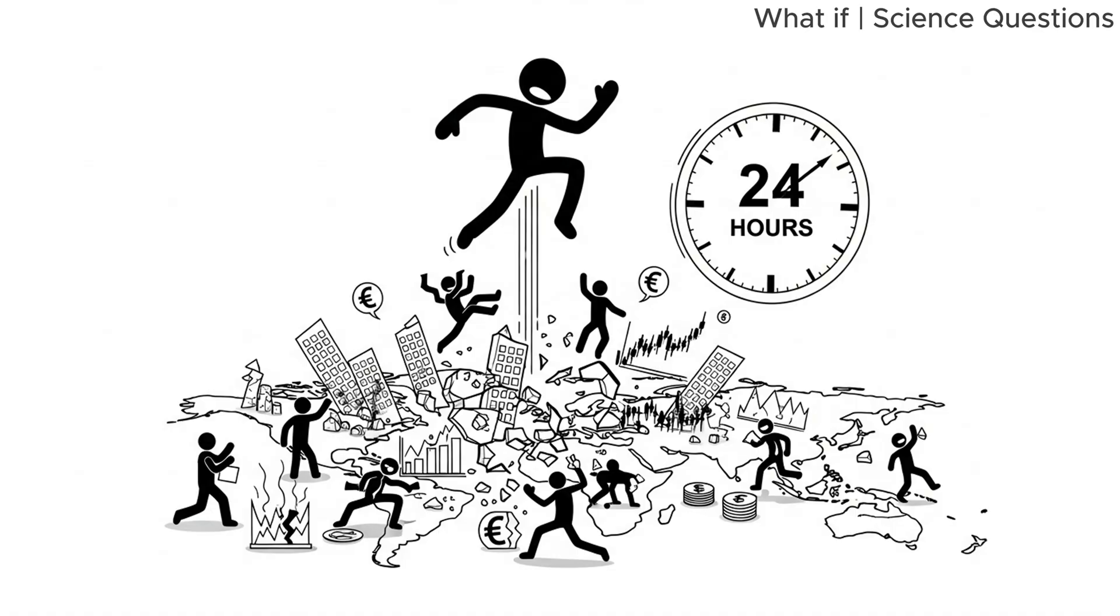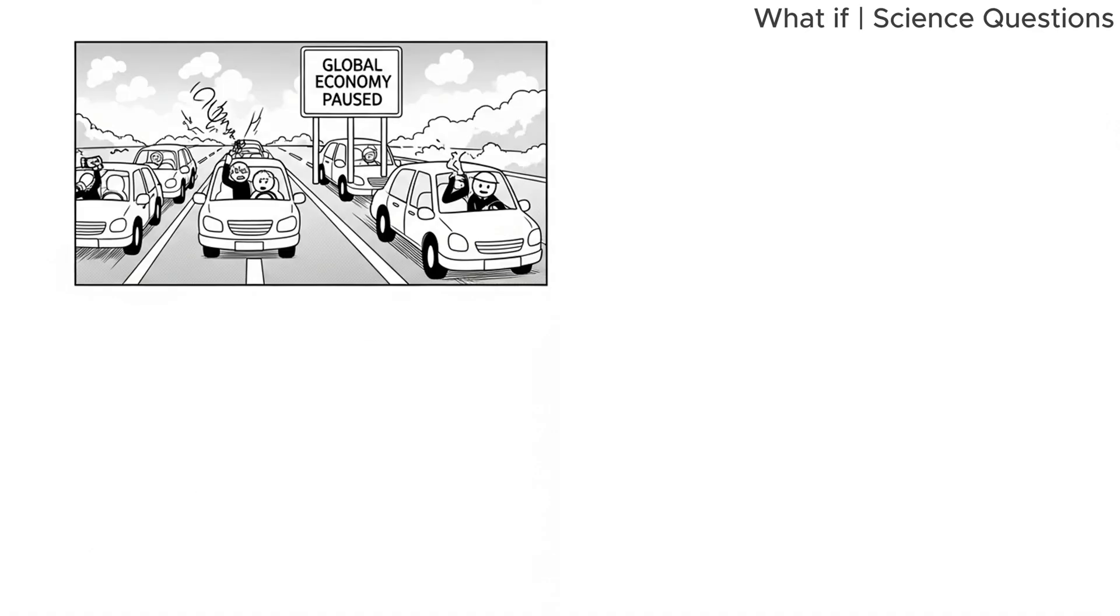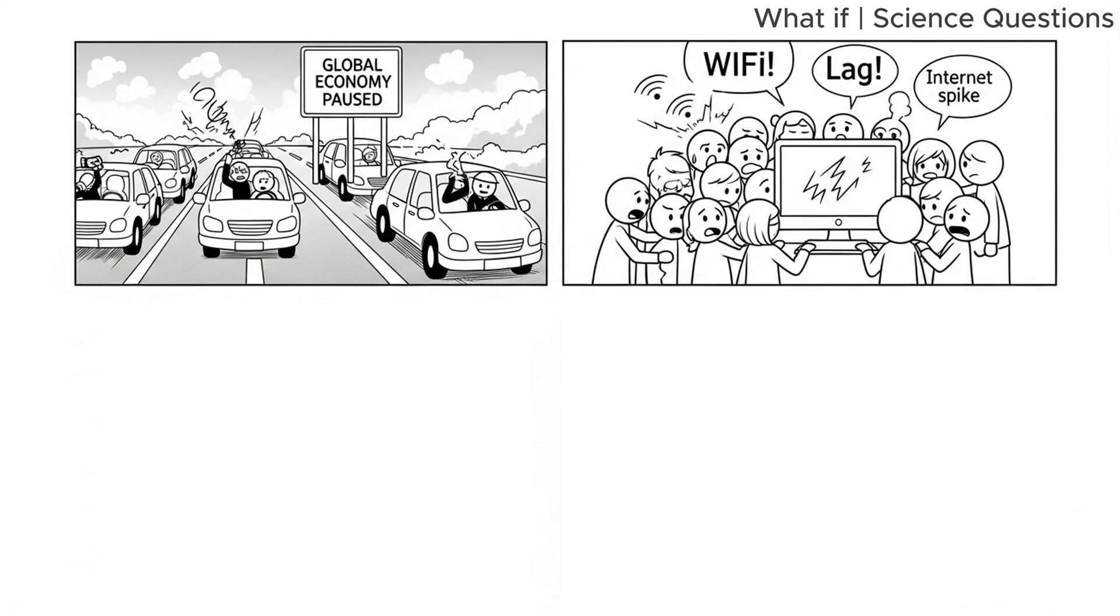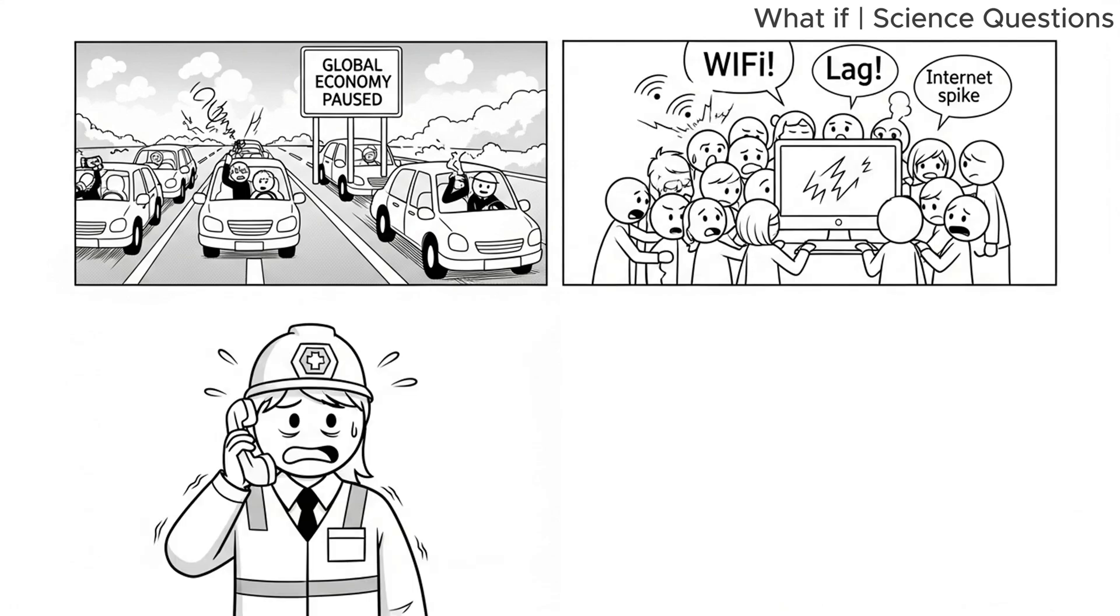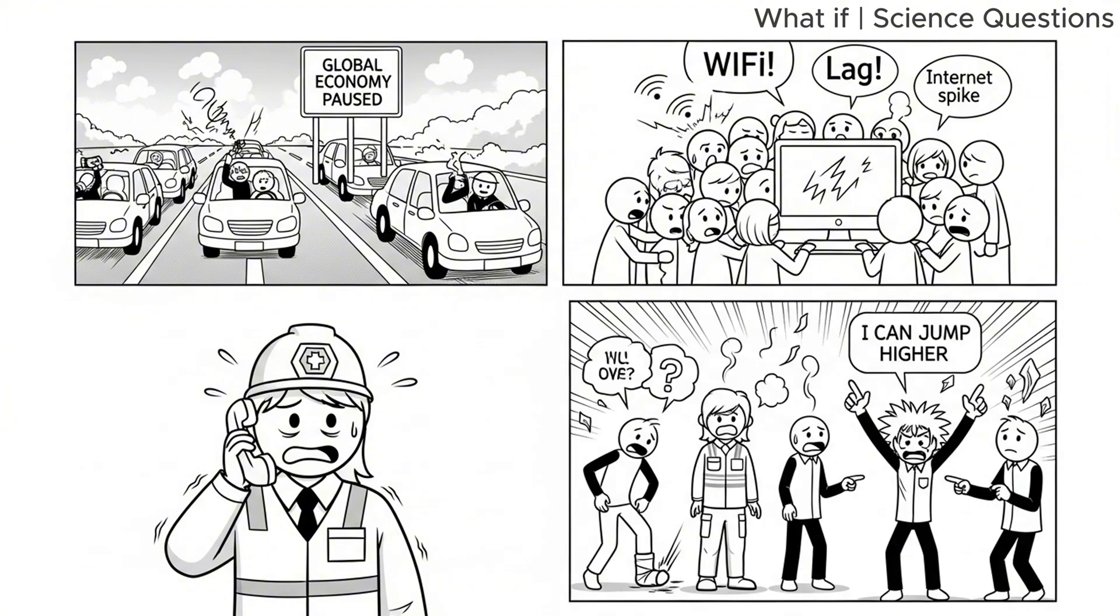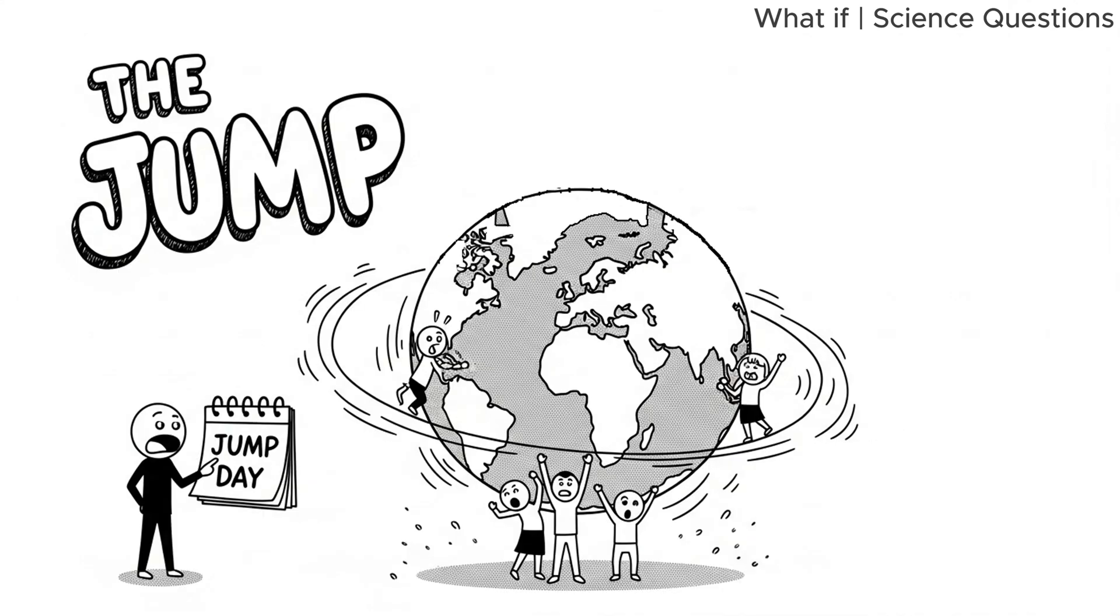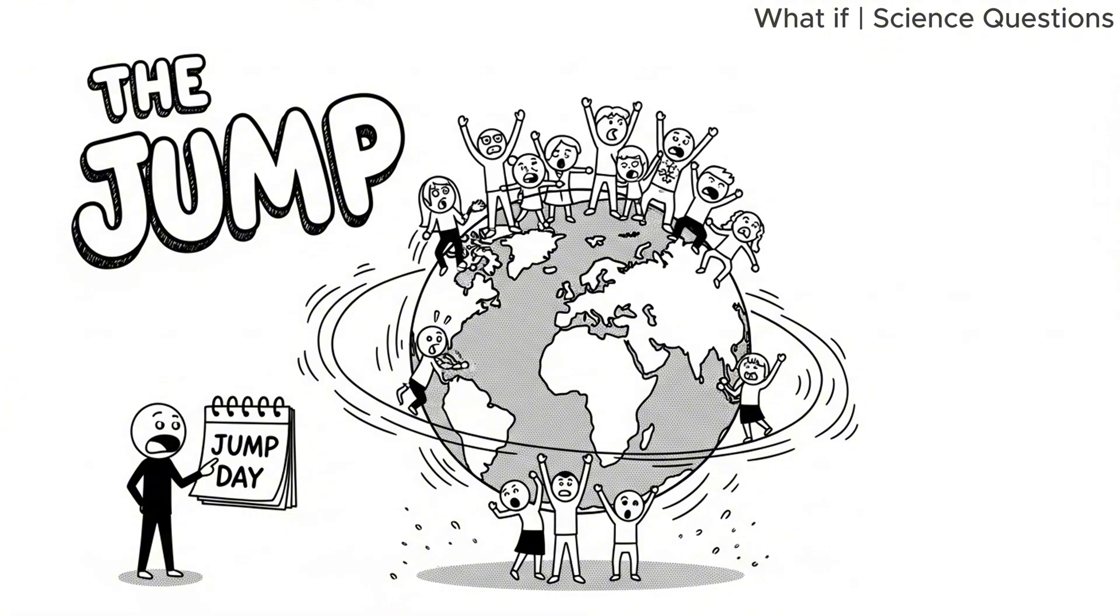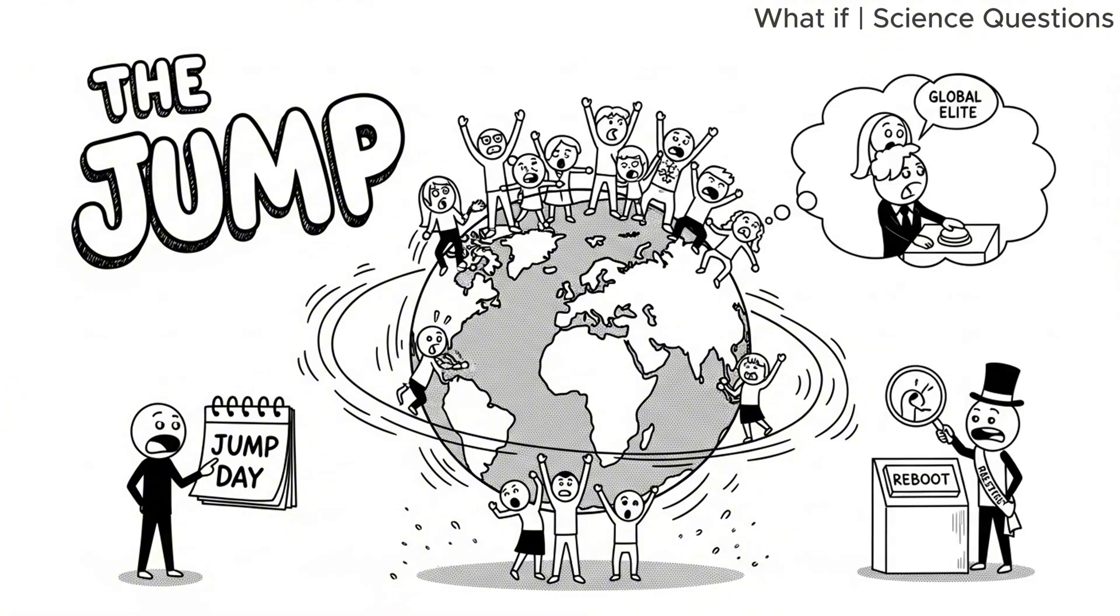The jump would also disrupt the global economy for a day. Transportation systems would be paused, internet traffic would spike, and the emergency services would be flooded with reports of weird tremors, broken ankles, and one guy who insisted he could jump higher than everyone else if he believed hard enough. Eventually, the media would call it the jump. Children would be born on jump day. Conspiracy theories would bloom, claiming it was a secret experiment by global elites to reboot the Earth's rotation.